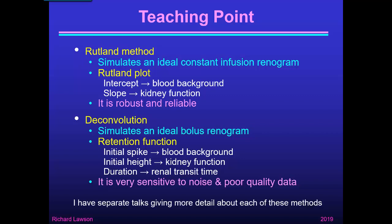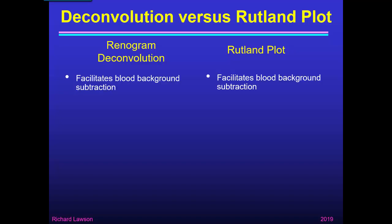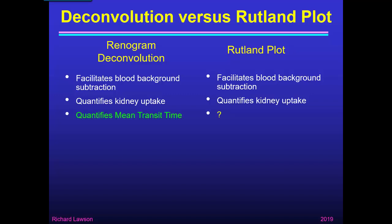I have a lot more to say about these techniques in separate talks on the Rutland method and on deconvolution. Comparing them: both facilitate blood background subtraction, allowing you to measure how much blood is in each individual kidney and subtract it appropriately. Both quantify kidney uptake by different methods but they ought to be equally good. Deconvolution quantifies mean transit time whereas the Rutland plot doesn't seem to have that benefit — but I'll come back to that. The Rutland plot is insensitive to noise whereas deconvolution is very sensitive to noise.